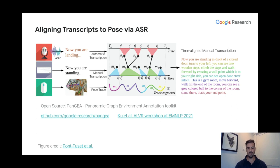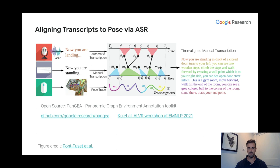To get the alignment, we borrowed an idea from the Localized Narratives dataset. We performed automatic transcription of the instruction audio, which generates a timestamp for every word. We then aligned those timestamps and propagated them to the manual transcription. The dataset ultimately includes a timestamp for every word in every instruction, aligned to a camera pose in what's called the annotator's pose trace. The annotation UI and infrastructure for aligning transcripts to pose has been open-sourced — it's called Pangea, available under the Google Research GitHub account.